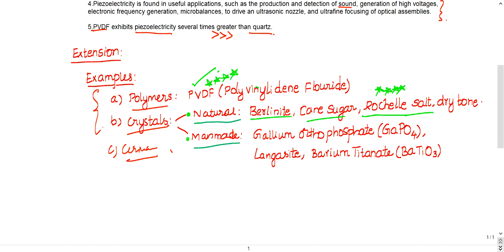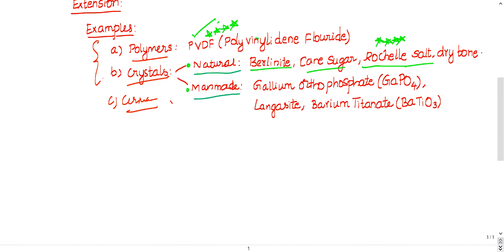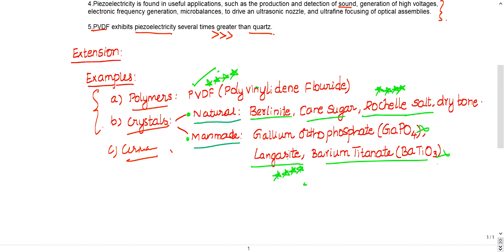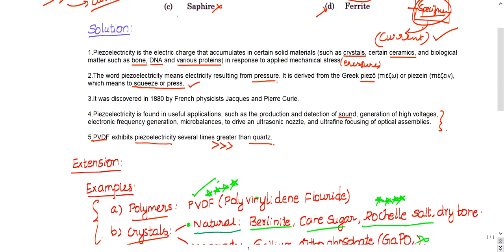If you see these two options, answer directly without thinking. Man-made crystals include gallium orthophosphate, langasite - these days they are asking langasite - and barium titanate. As you are not a chemistry student, I hope they will not ask these. Langasite, Rochelle salt, and PVDF - try to remember these three names.